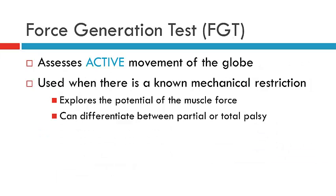On the other hand, we have the force generation test. Unlike the forced duction test, the force generation test is looking at active movement of the globe rather than passive movement. This means we are asking the patient to move their eye and assessing them as they try to move it, gaining an understanding of the potential function of the muscle. This can help differentiate between partial and total palsies, and is usually used in patients who have a known mechanical restriction — where you know the eye is mechanically restricted but are unsure if the muscle has potential for function.